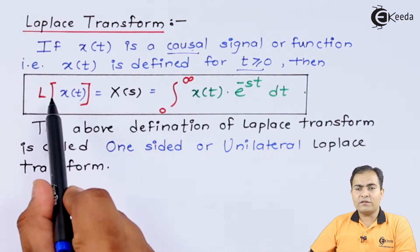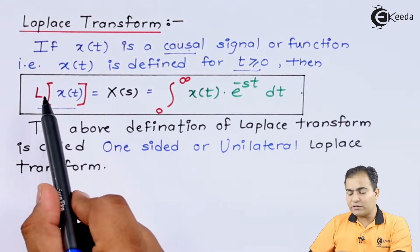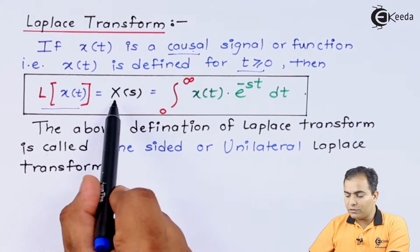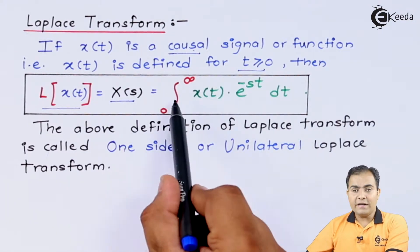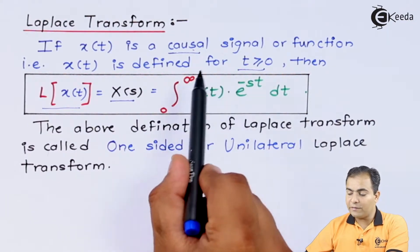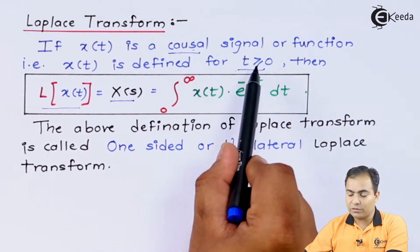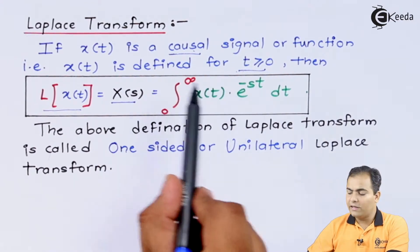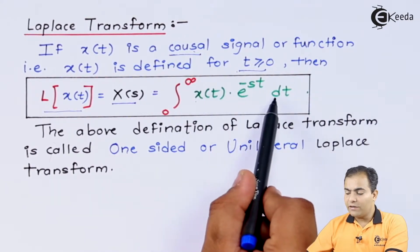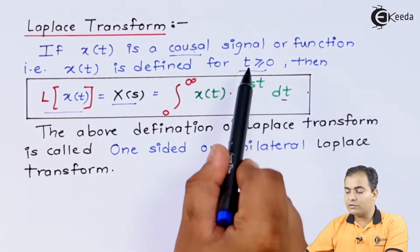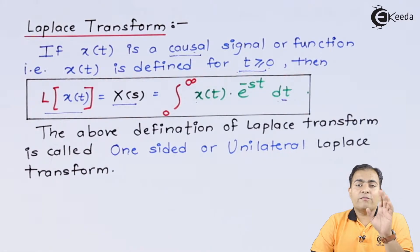According to the definition, the Laplace Transform of X(T) is represented as X(S). When the function is converted into the Laplace domain, we write it as X(S). We integrate the function from 0 to infinity because the function is causal, having a time period greater than or equal to 0. The product is X(T) into e to the power minus S·T dt, integrated with respect to time from 0 to infinity. This is the definition of the unilateral or one-sided Laplace Transform.